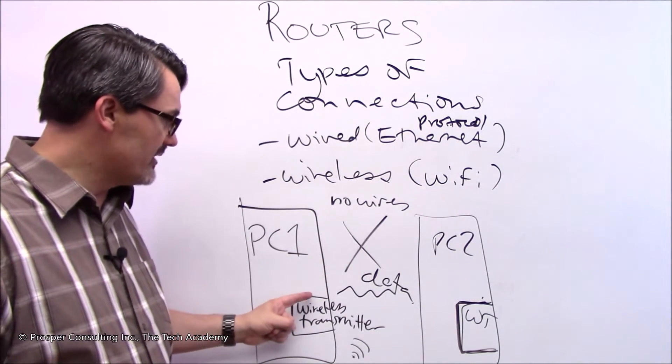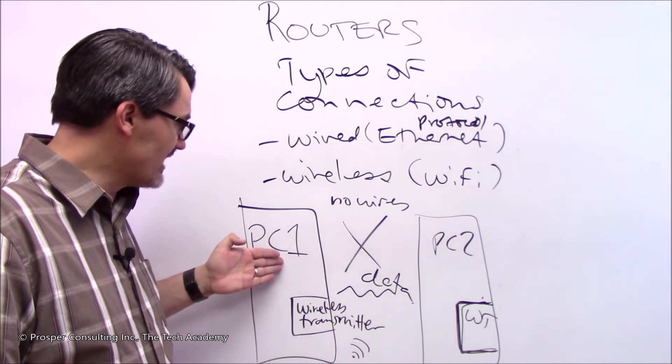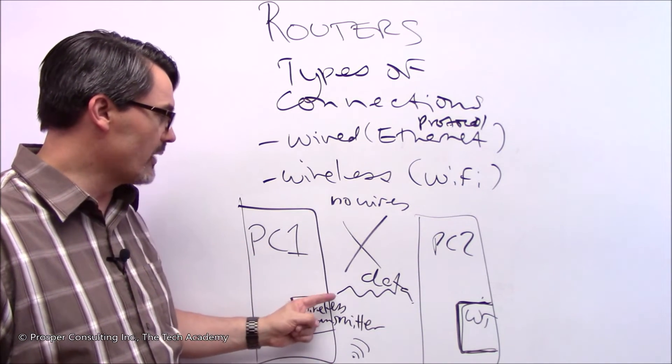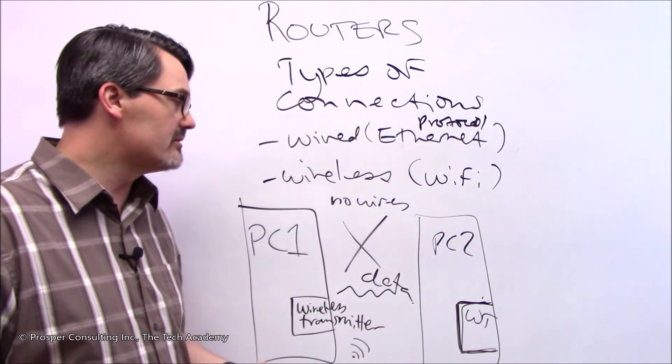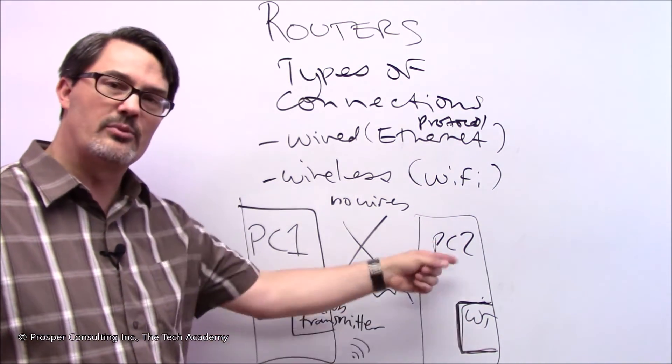That piece of equipment, again, takes data from the computer, turns it into a radio signal. It sends that data over to another wireless transmitter, which receives it, and then converts it to the data that that computer can use.